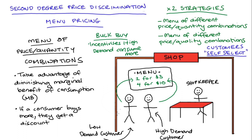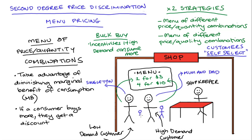Quantity-price menus are very often associated with bulk buying scenarios. In these cases, the low demand consumer is perhaps a singleton living alone and only cooking or providing for one. The high demand customer is perhaps a parent with a big family, so they have a higher demand for the product and will buy more if the per-unit price is just a bit lower.